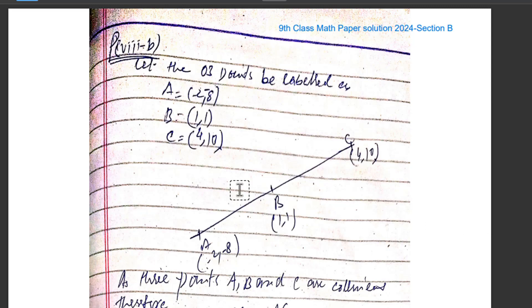In today's video, we are going to cover Section 8B of the math paper for Class 9, which was held in the year 2024. This is part of Section B and the paper belongs to FDISP.